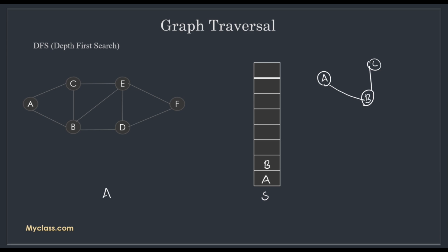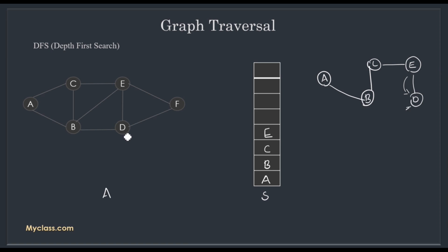Now considering C: adjacent nodes are A (visited), B (visited), and E. We go to E from C, so we push C onto the stack. When we reach E, adjacent nodes are B, C, and D — only D is unvisited. We go to D, suspending E and pushing E onto the stack. Now at D, non-visited adjacent nodes: B is visited, E is visited, only F remains. We go to F, suspending D and pushing D onto the stack.